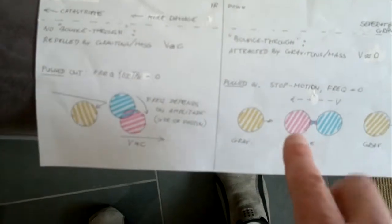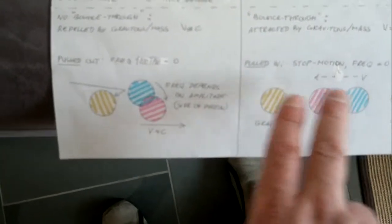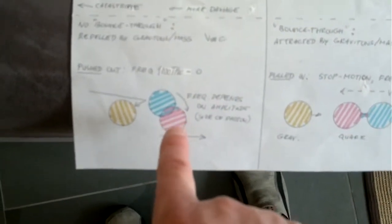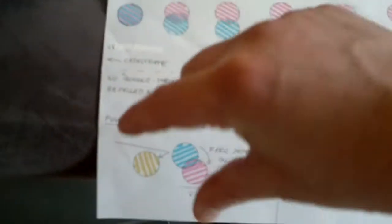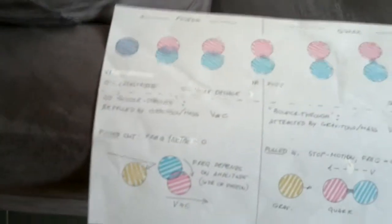So again, this little array. And of course again, quarks get pulled in, but photons get pushed out. And because they get pushed out, and because they get pushed, they tend to rotate.